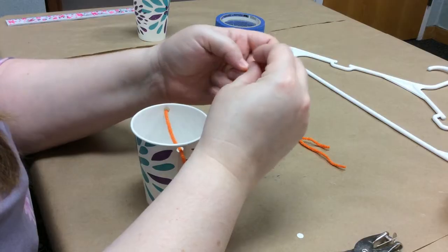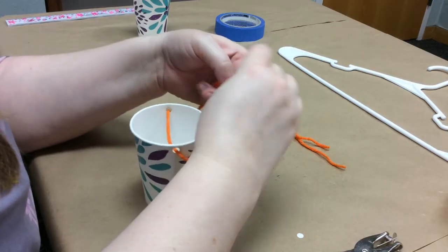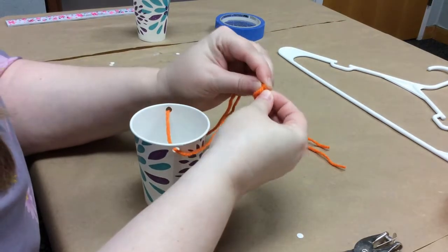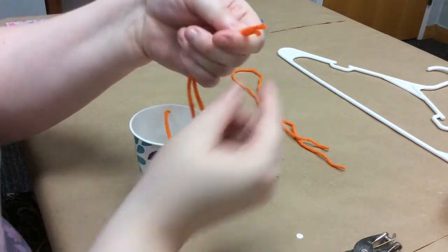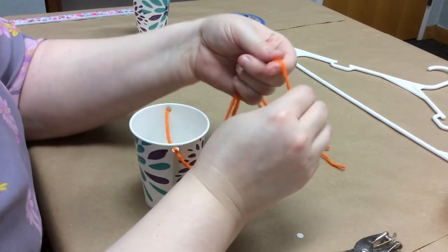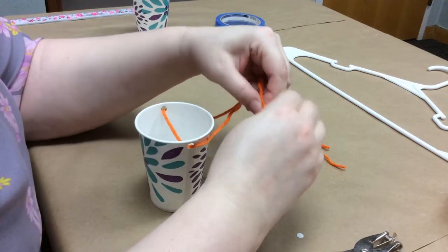And the knots are another part where your symmetry can get off. So we're just going to tie our two ends. We're going to gather them in our hand like so, so that they're even on the end. And we are going to tie them into a knot.